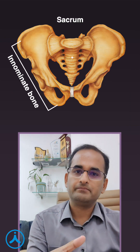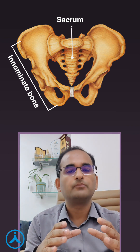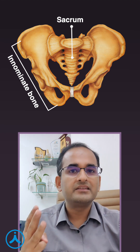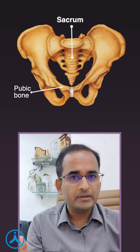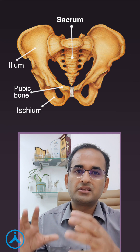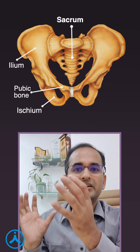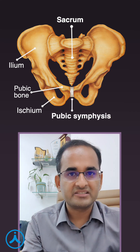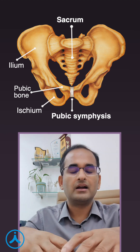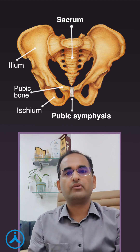Let's talk about pelvic fractures and their classification. But before talking about classification, we will go through pelvic anatomy. The pelvis is formed by two innominate bones and one sacrum. The two innominate bones are anteriorly and the sacrum is posteriorly. These innominate bones are formed by three other bones which fuse together to form the acetabulum and the innominate bone itself — the pubic bone, ileum bone, and ischium bone. Two innominate bones come anteriorly and join to form the pubic symphysis, and posteriorly they articulate with the sacrum to form the pelvic ring.